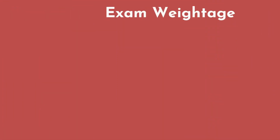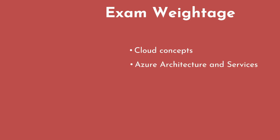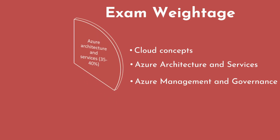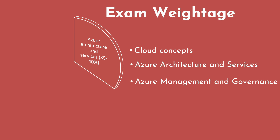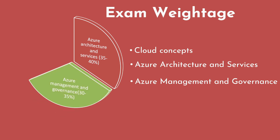This exam AZ900 is broadly categorized into three main topics: cloud concepts, Azure architecture and services, which has all the core services of Azure, and Azure management and governance. If we see the weightage, Azure architecture and services is around 35 to 40%, Azure management and governance is around 30 to 35%, and cloud concepts is around 25 to 30%. So cloud concepts is the shortest topic, but there will be a lot of questions from that, so make sure you understand these basics thoroughly.